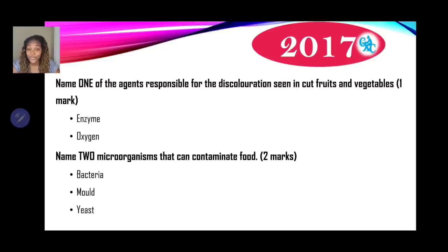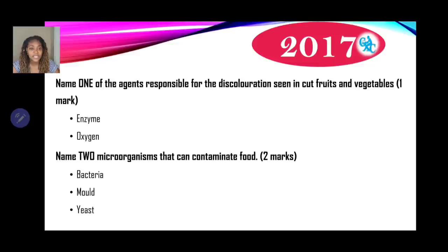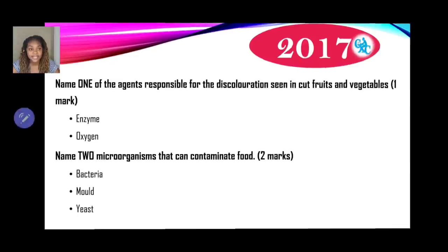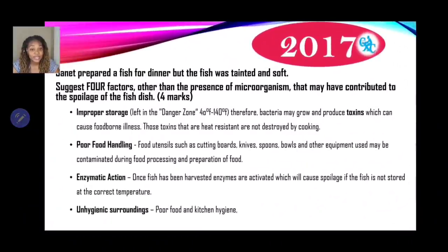To prevent browning — for example when making fruit salad with bananas or apples — your teacher may advise adding an acidic substance such as lime juice or lemon juice to slow down or prevent that process. Next question from 2017: name two microorganisms that can contaminate food, worth two marks. The answers are bacteria, mold, and yeast.